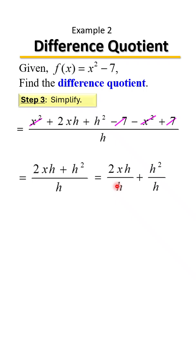When you do that, you can clearly see that they're going to have an h in common that you can cancel out for each term there. So once you cancel those h, what you're going to be left with is your answer of 2x plus h.